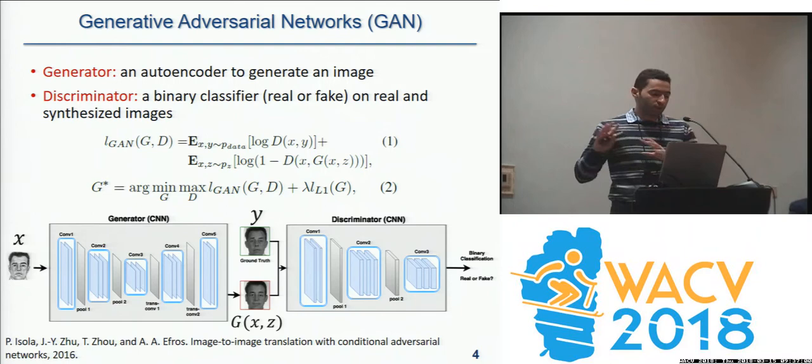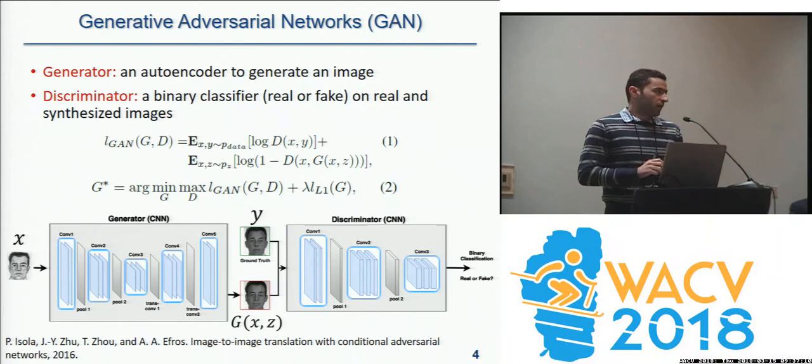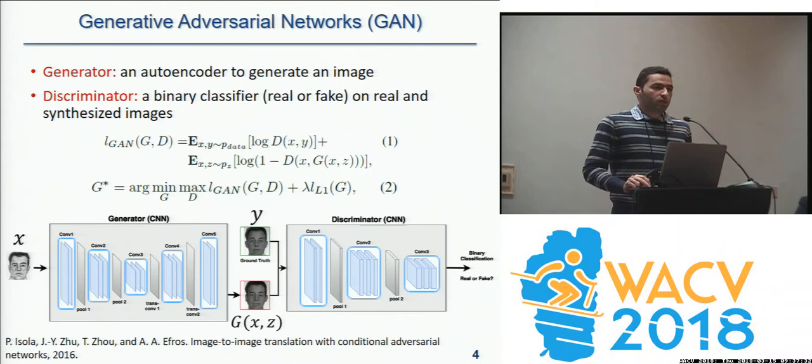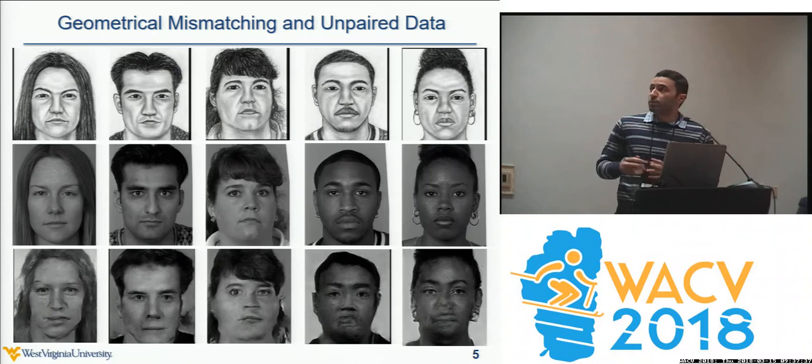For image synthesis using GAN, we have an L1 norm loss between the synthesized image and the ground truth of the given hand-drawn sketch to capture both low and high frequency information, and we also have the GAN loss, which is the classification loss of the discriminator. The discriminator tries to minimize this GAN loss, while the generator tries to maximize it.